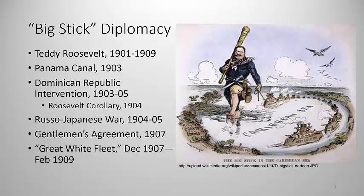The U.S. also intervened in the Dominican Republic between 1903 and 1905, leading to the Roosevelt Corollary to the Monroe Doctrine in 1904. Where the Monroe Doctrine of 1823 had promised the U.S. would stay out of European wars and demanded that European countries stay out of New World business, the Roosevelt Corollary went further, claiming the right of the U.S. to intervene in New World states if conditions might lead to European interventions. A Dominican default on debts owed to European banks led to a threatened invasion, so the U.S. invaded first.